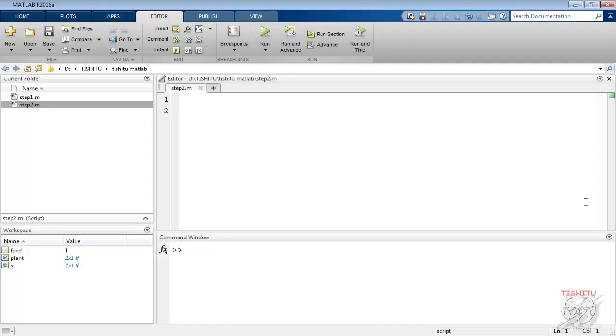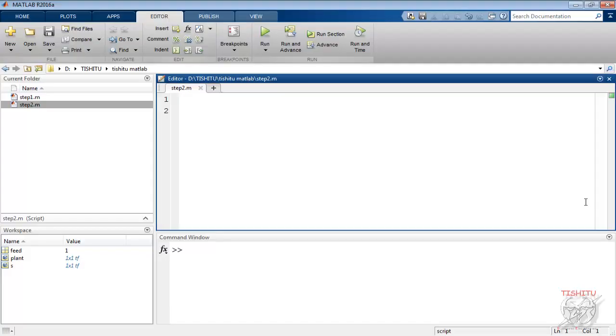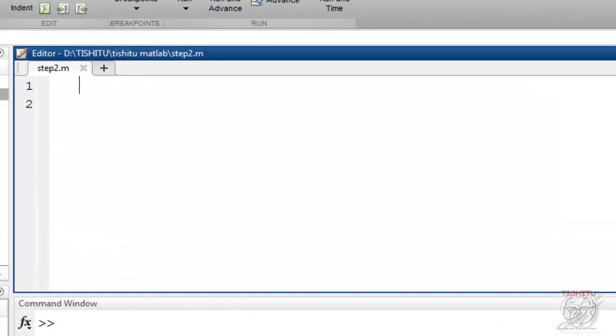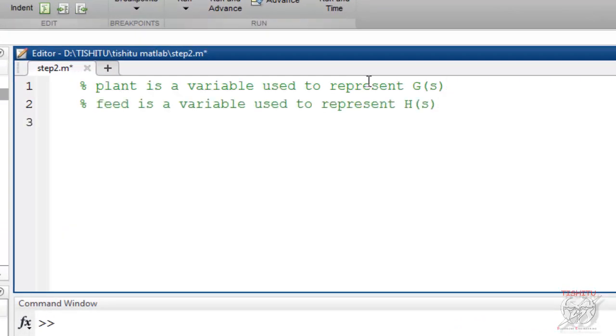Once you open MATLAB and a basic layout of MATLAB you get, then open a script file to work over here. First two lines use to put comment that is plant and feed used as a variable to represent G(s) and H(s). Then use those three basic command as discussed in previous class also.